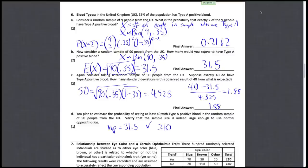The other check is N times 1 minus P. And that's 90 times 0.65, which is equal to 58.5. And that's also greater than or equal to 10. So we have verified that the sample size is large enough here.